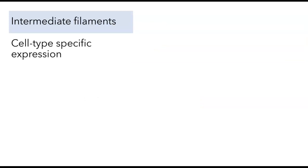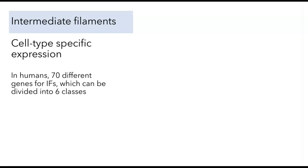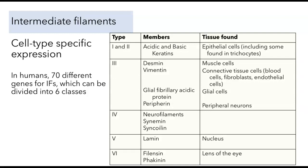The second characteristic is their cell-type specific expression. There are a lot of different types of intermediate filaments — in humans, 70 different genes code for intermediate filaments — and we can divide them into six broad classes.